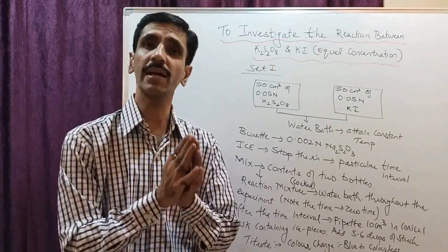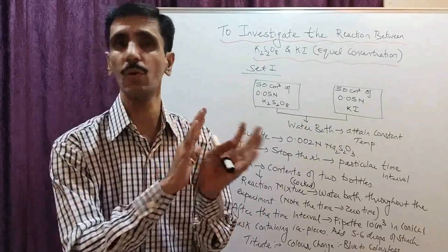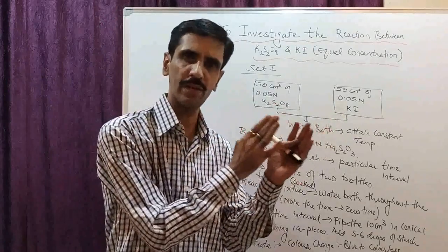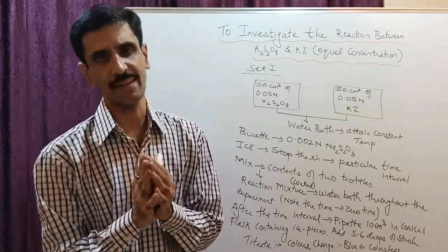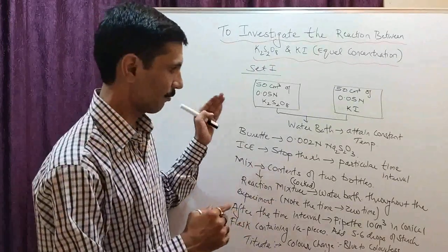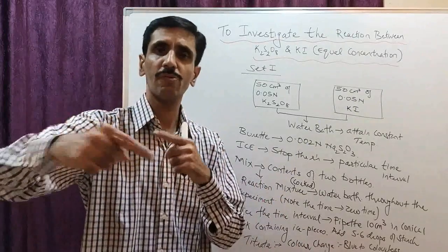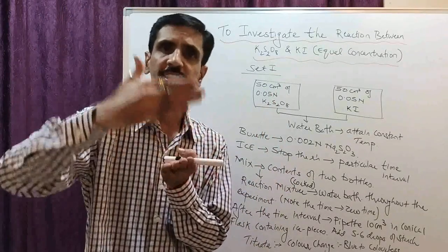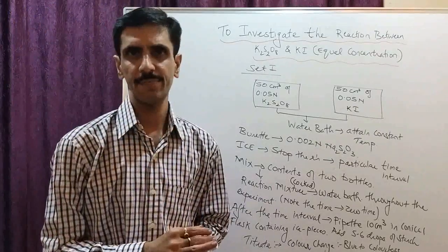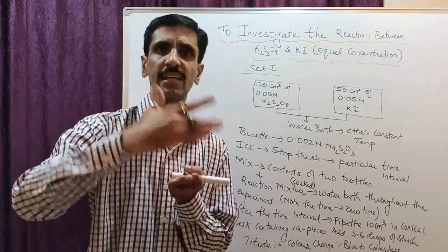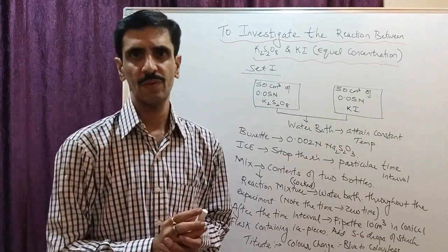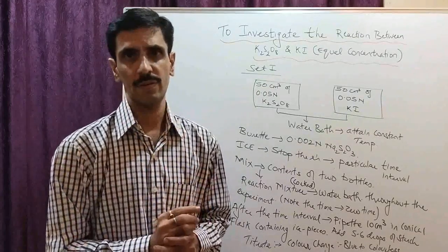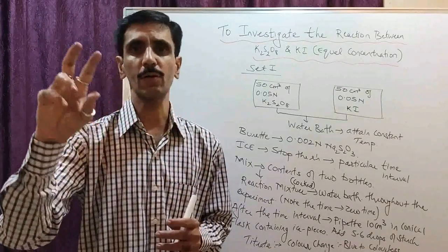You will not take a reading at zero time — that is, immediately after mixing. Wait for your chosen interval. If reading at 5-minute intervals: 5, 10, 15, 20, 25, 30 minutes. If at 10-minute intervals: 10, 20, 30, 40, 50 minutes. You can take around 6 readings total. Make sure the time interval is constant and each reading corresponds to its respective time interval.